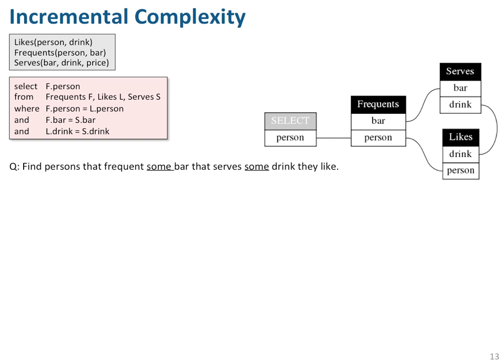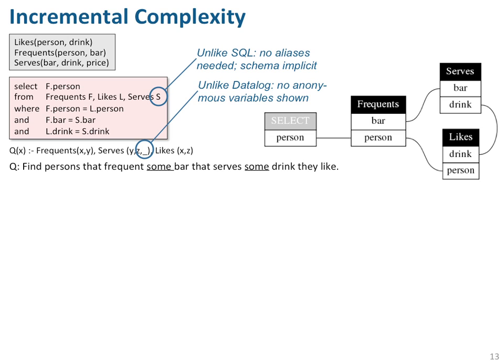Here we see a simple conjunctive query with the intent to find persons that frequent some bar that serves some drink they like. In the upper left in grey we see the schema, below in red the SQL statement, and on the right the visualization. Note that the visualization also helps us immediately understand the relevant parts of the schema, and is in this respect very similar to Datalog — but in contrast to Datalog we show only those attributes relevant for the query. For example, the relation 'serves' does not show the attribute 'price' because it doesn't contribute any meaning to the particular query at hand.